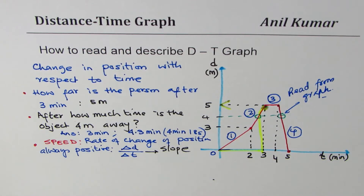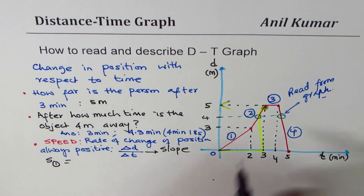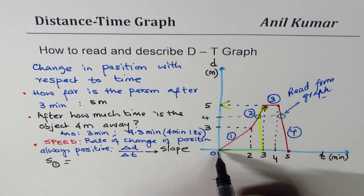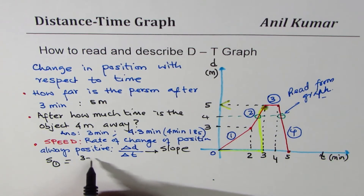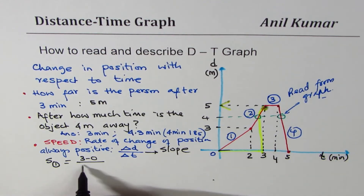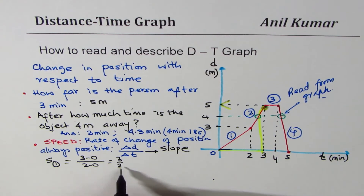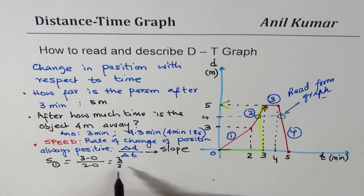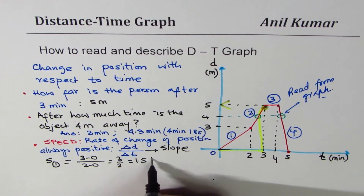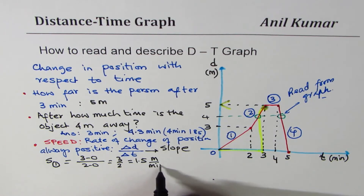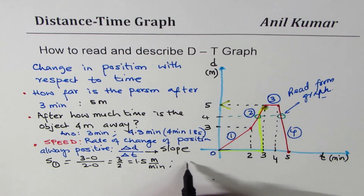Let's find speed in interval one. Change in distance is 3 − 0 = 3, and change in time is 2 − 0 = 2. So speed = 3/2 = 1.5 meters per minute. Units are meters per minute — that's how you find speed for the first leg.